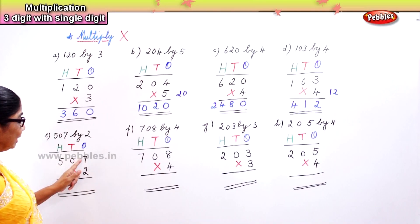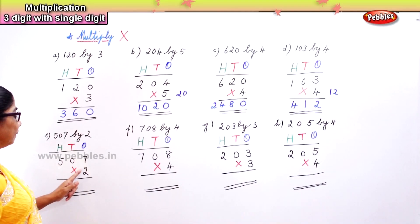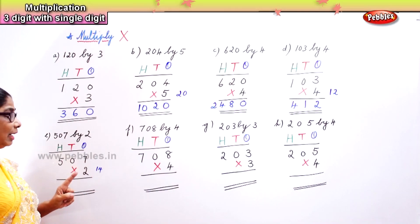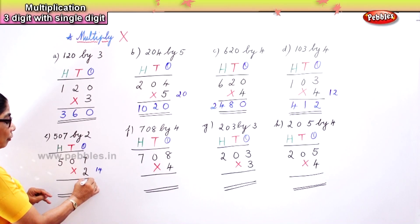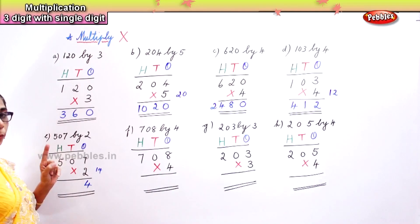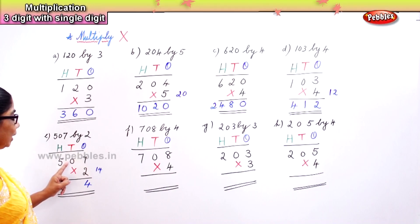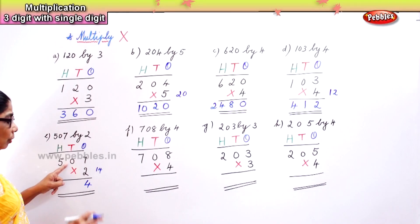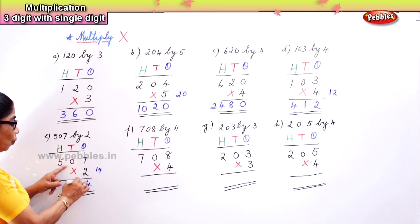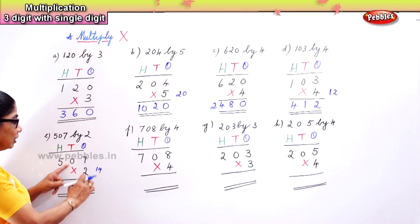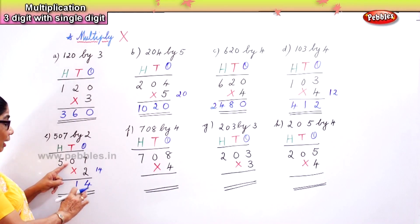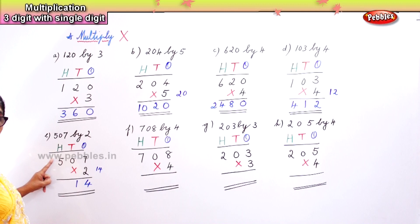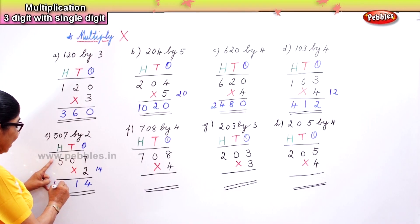Four ones are four. Next: 507 multiplied by two. Seven twos are fourteen — write it small. In the ones place put the four. Then in the tens place zero into two is zero, so you bring that one here. Then in the hundreds place, five twos are ten.